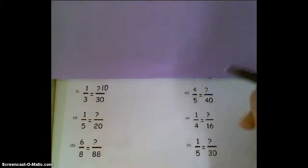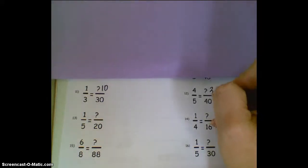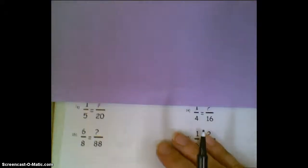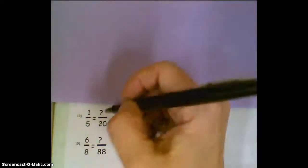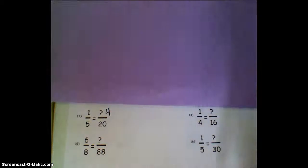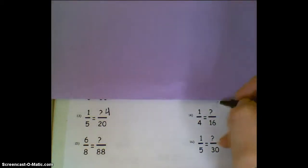5 times 8 is 40. 4 times 8 is 32. 5 times 4 is 20. 1 times 4 is 4. 4 times 4 is 16. 1 times 4 is 4.